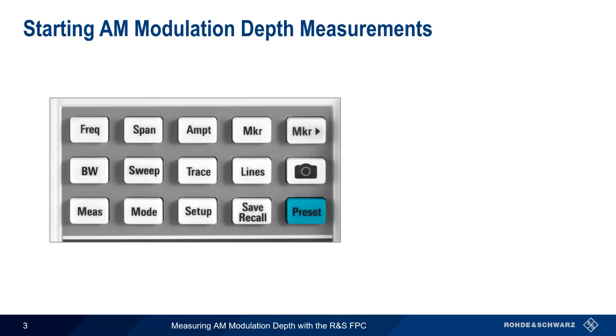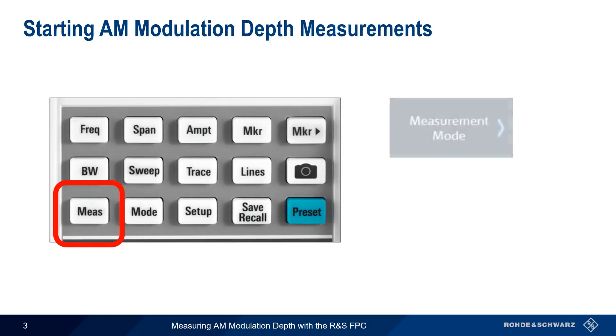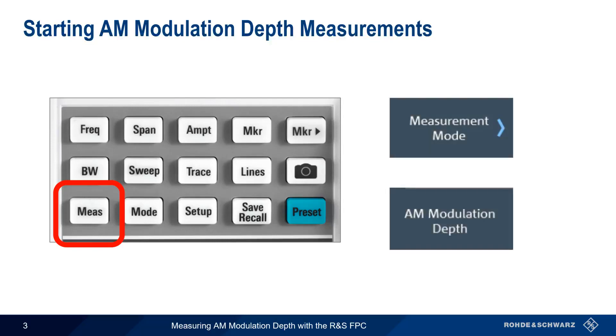To access AM modulation depth measurements on the FPC, first press the Measure hard key. Then press Measurement Mode and select AM Modulation Depth.